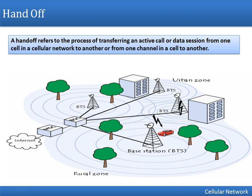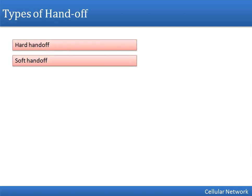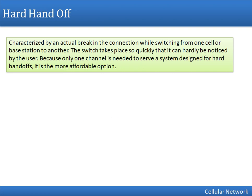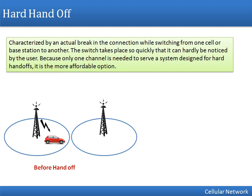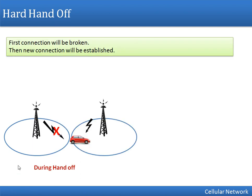There are two types of handoff: hard handoff and soft handoff. In hard handoff, when a person moves to another cell, the previous connection will be broken and a new connection will be established to the new base station. So if the user is in this car connected to one station and moves to another area, this connection will be broken first and then a new connection will be made. You can remember hard handoff with the phrase 'break before make.'